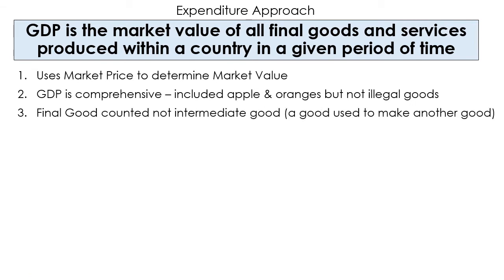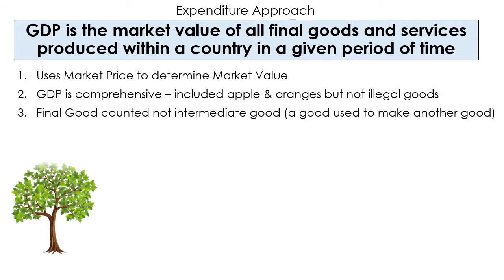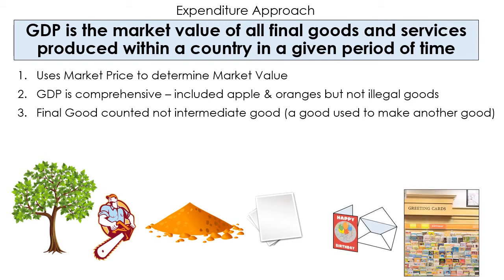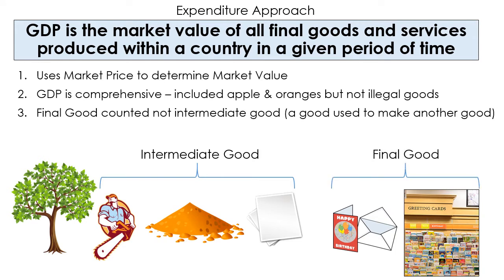The word 'final' is important to understand. A final good is the actual product sold to the public — the end product. The classic example is paper: trees are cut down, paper is produced, and paper is sold to a greeting card company. The greeting card company uses that paper, produces a greeting card, and sells it to the public. It is the greeting card that is counted. The wood pulp and the paper are considered intermediate goods — all those costs keep getting rolled into the next version of the good. So it is the final good, not intermediate goods, that are counted in GDP.